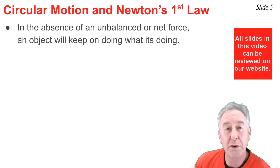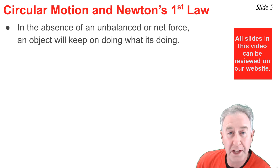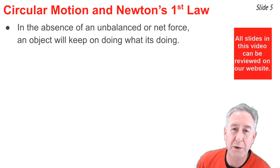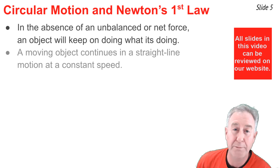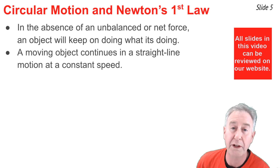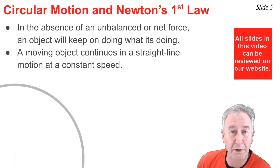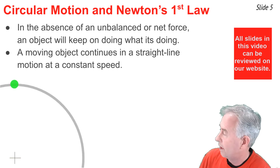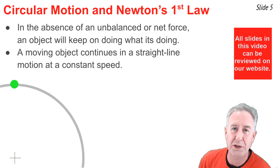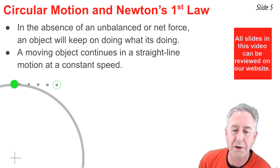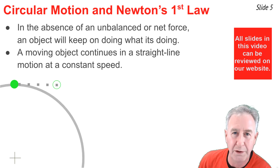Newton's first law provides further clues to understanding what must happen for an object to move in a circle. In the absence of an unbalanced or net force, an object keeps on doing whatever it's doing — if moving, it continues with the same speed and in the same direction. Here is a circle with the center marked, and an object at the 12 o'clock position. This object, in the absence of any force, would travel tangent to the circle along the dotted line.